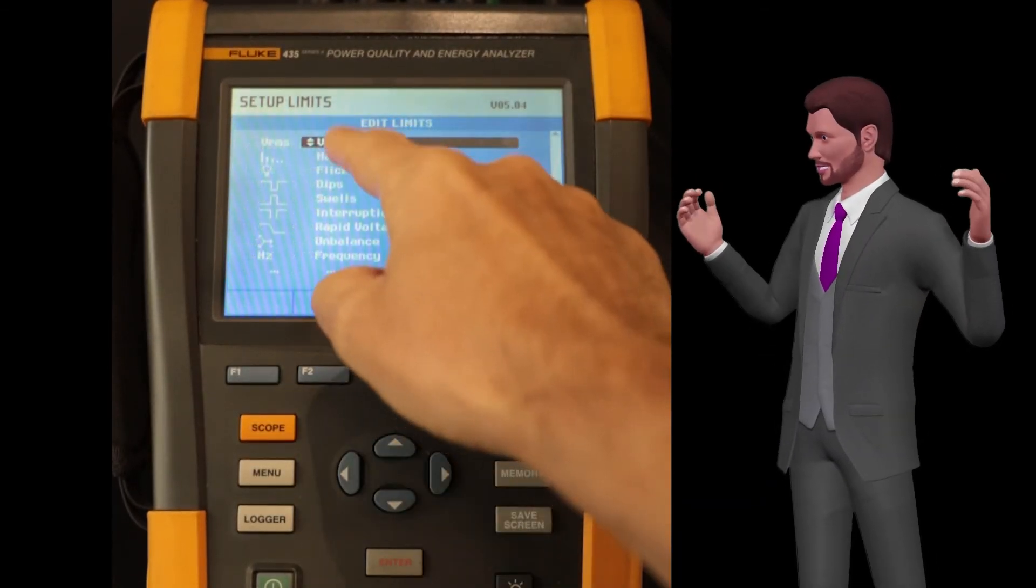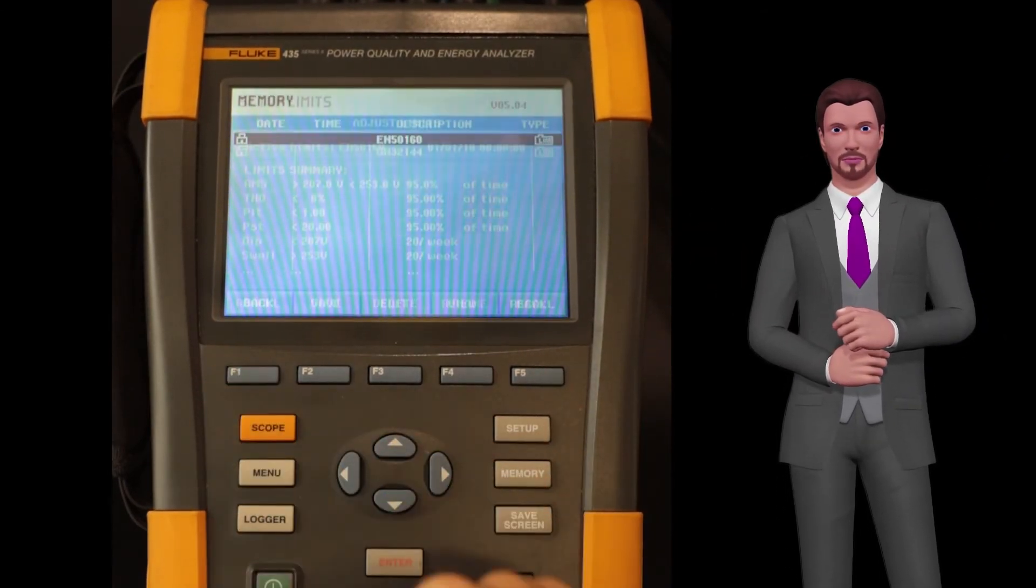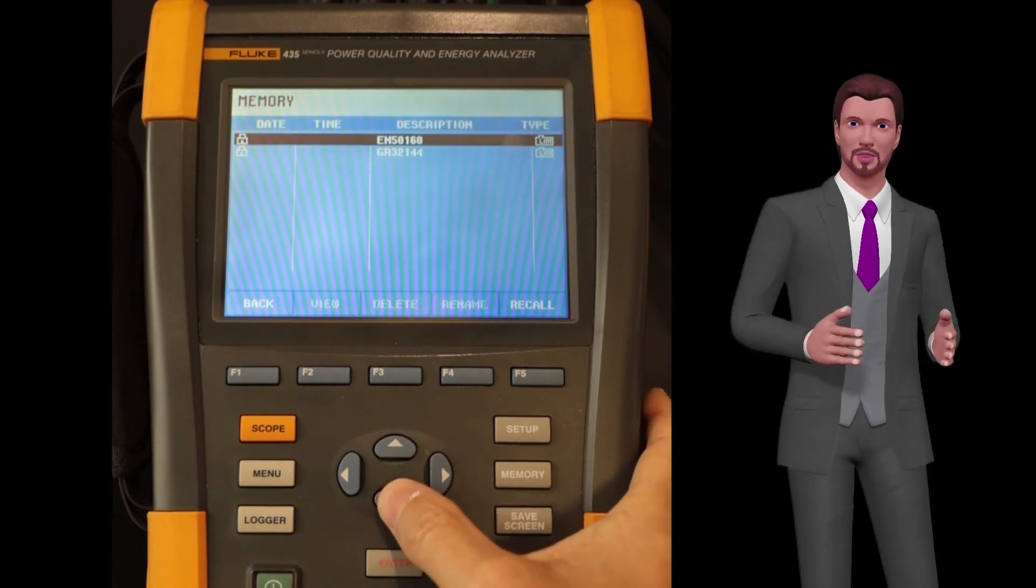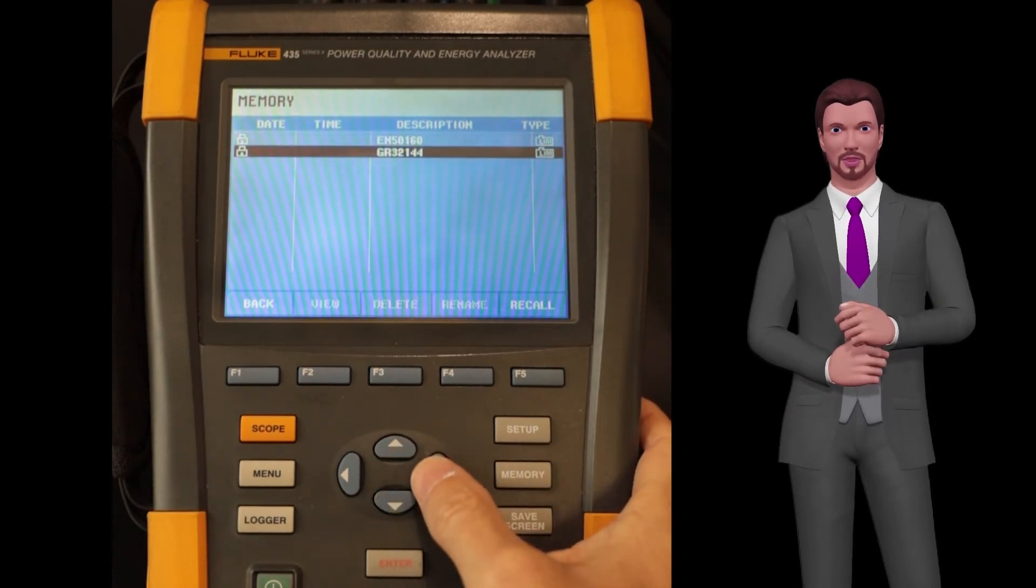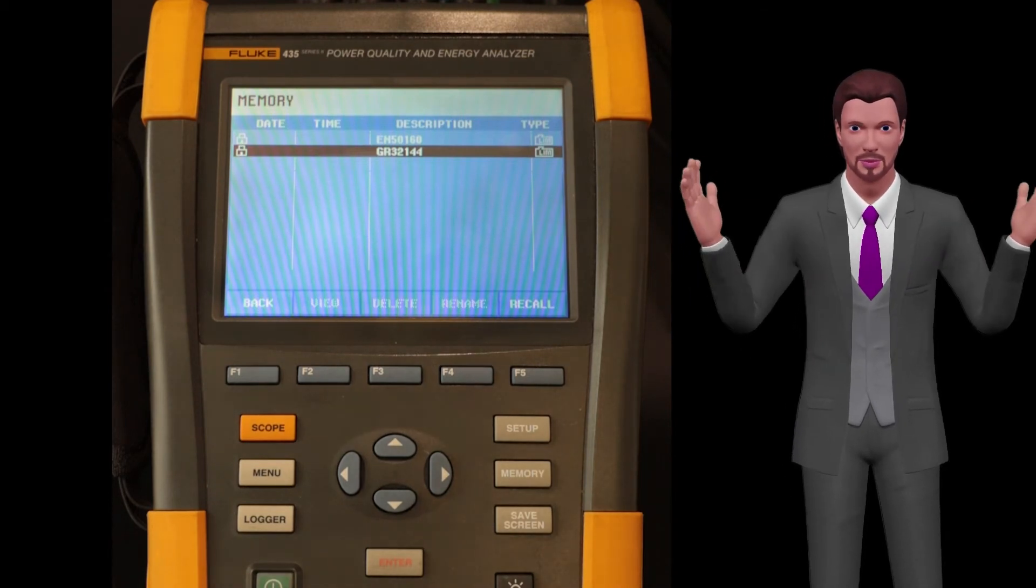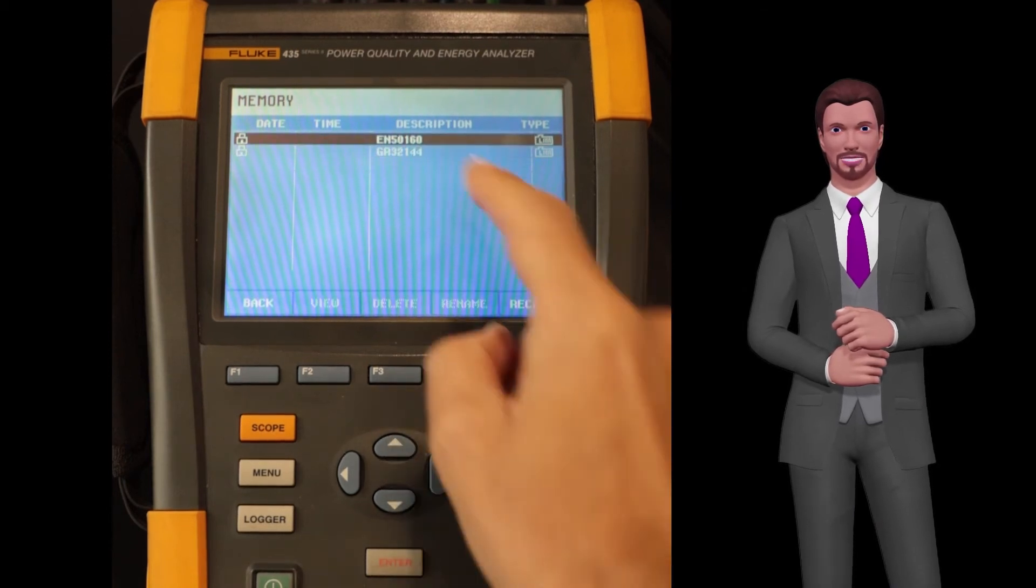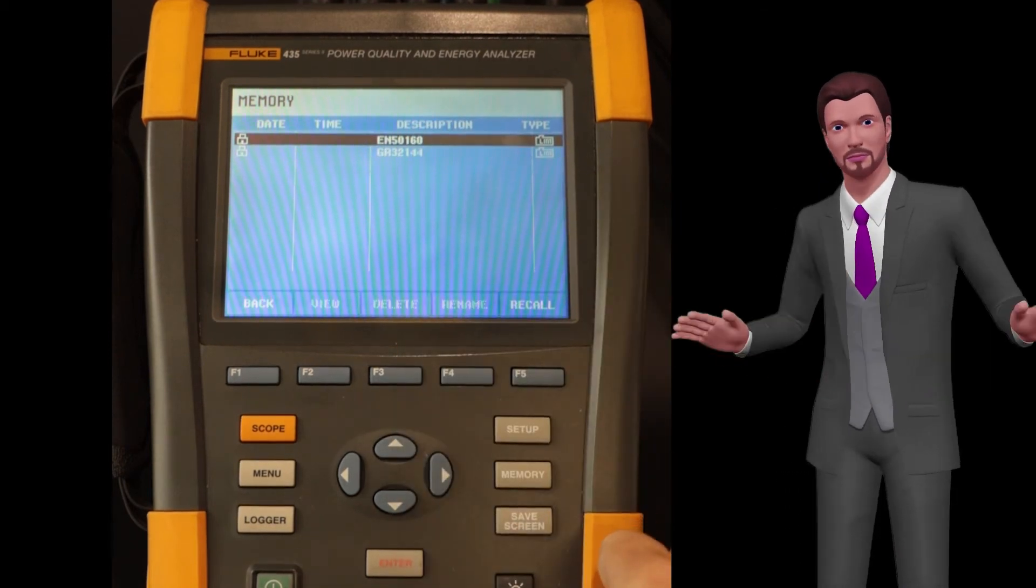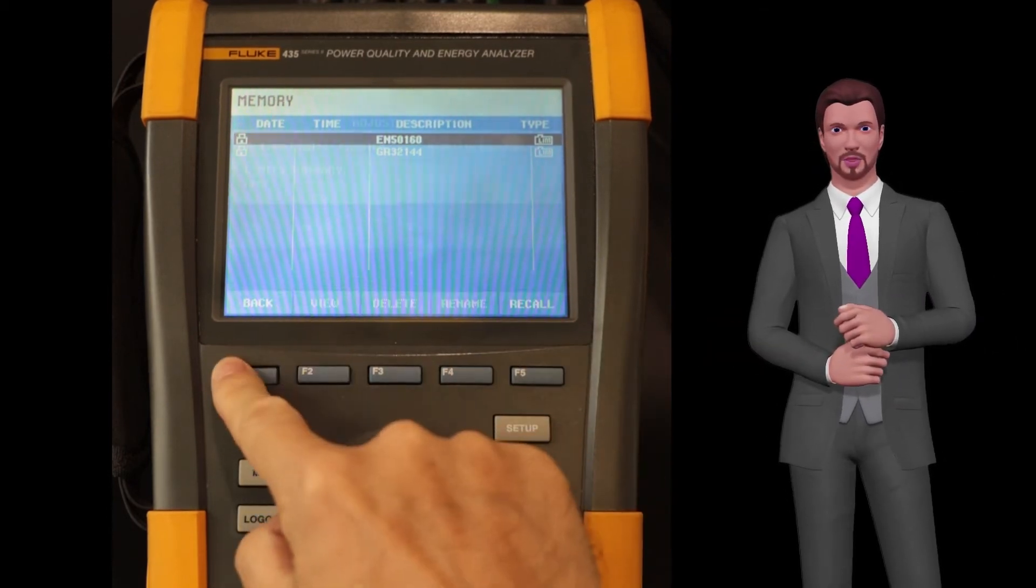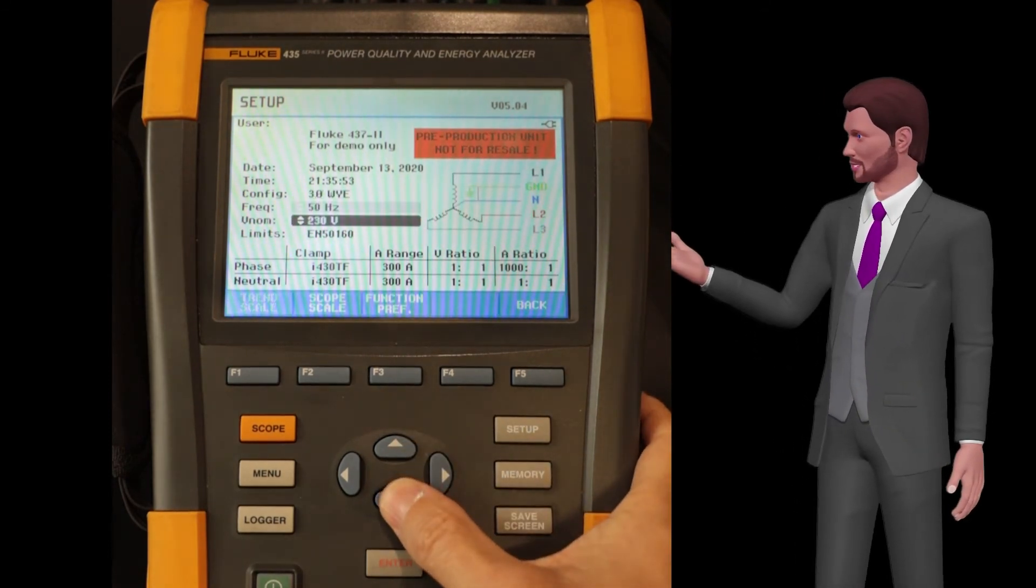We can review and edit these limits, although probably this will be part of a new video. If we now press the F1 key recall, we can see the different standards that we can choose from. In this case, the EN 5160 standard appears, applicable in many countries both inside and outside Europe, and the GOST 32-144 standard, applicable for example in Russia. In my case, I select the EN 5160 standard, press the enter key, and the back key twice to exit to the main configuration menu.